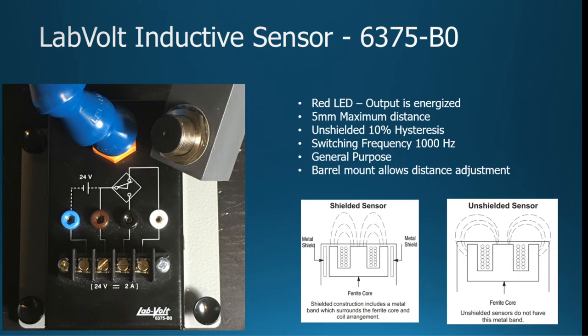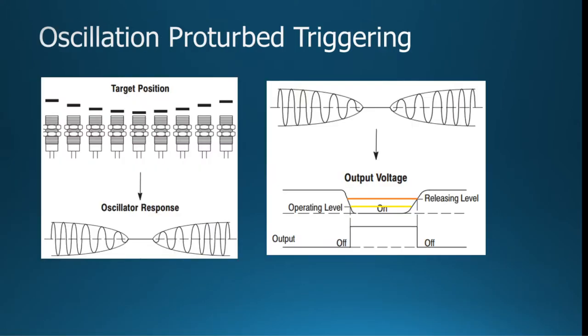This is just a general purpose. It's barrel mounted, allows the distance change there. So what will happen is in that five millimeter distance, as your target moves closer and starts perturbing that space, there's an oscillating response to that change in that magnetic field. As that field gets kind of pushed down because a piece of metal gets into it and affects the magnetic field that was currently being generated, it will go through and trigger.